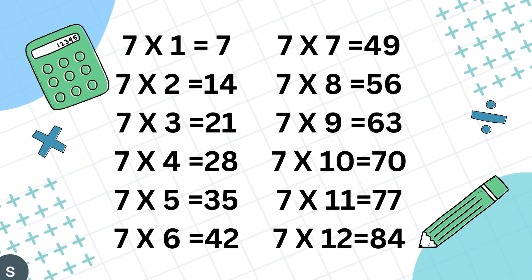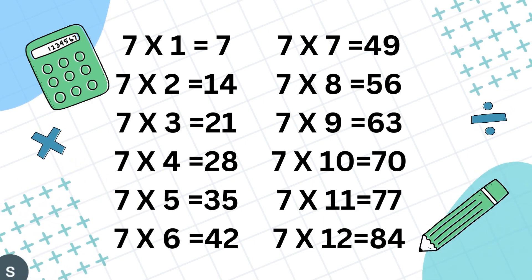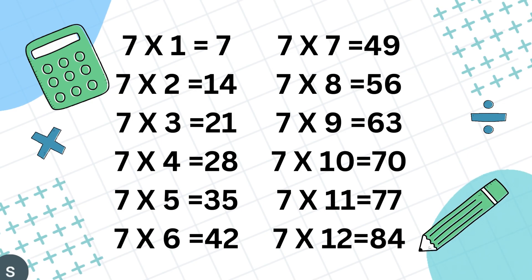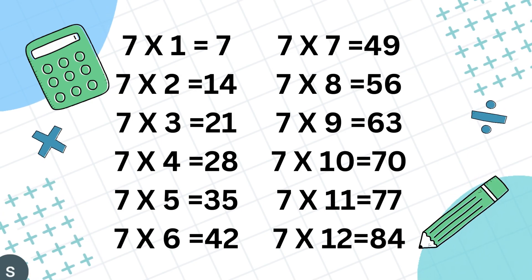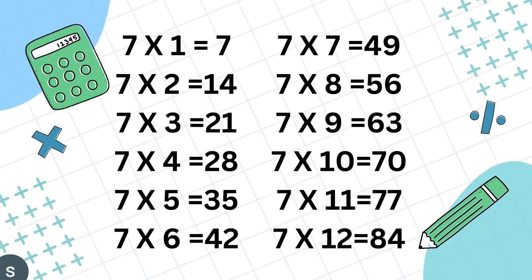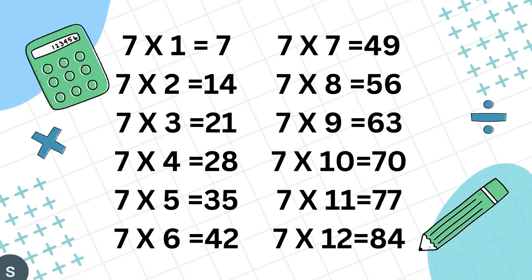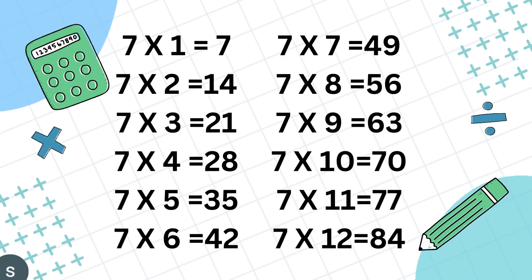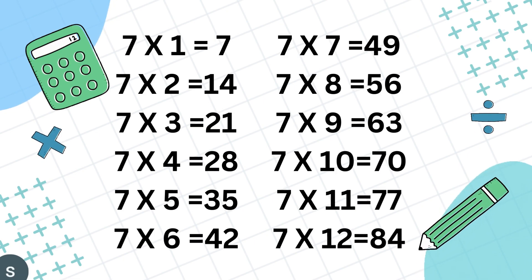Table of 7. 7 1's are 7, 7 2's are 40, 7 3's are 21, 7 4's are 28, 7 5's are 35, 7 6's are 42, 7 7's are 49.